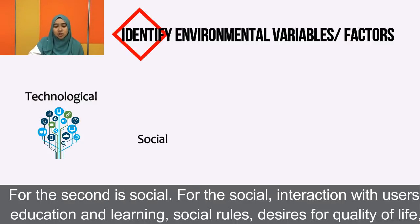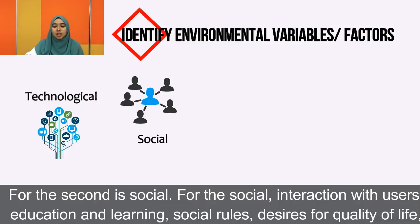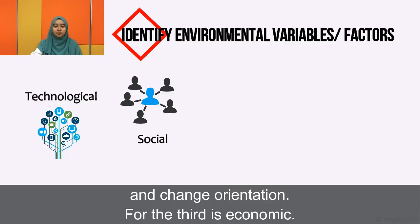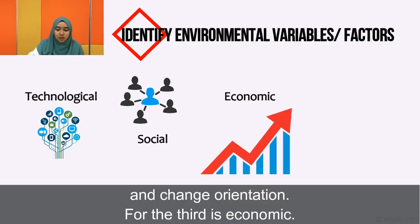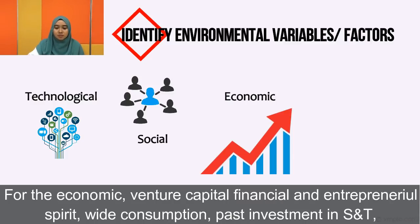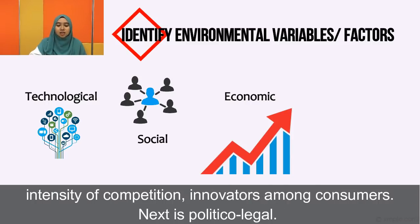The second factor is social: social interaction with users, education, learning, social rules, desire for quality of life, and chain orientation. The third is economic: venture capital, financial resources, entrepreneurial spirit, wide consumption, fast investment in science and technology, intensity of competition, and innovators among consumers.